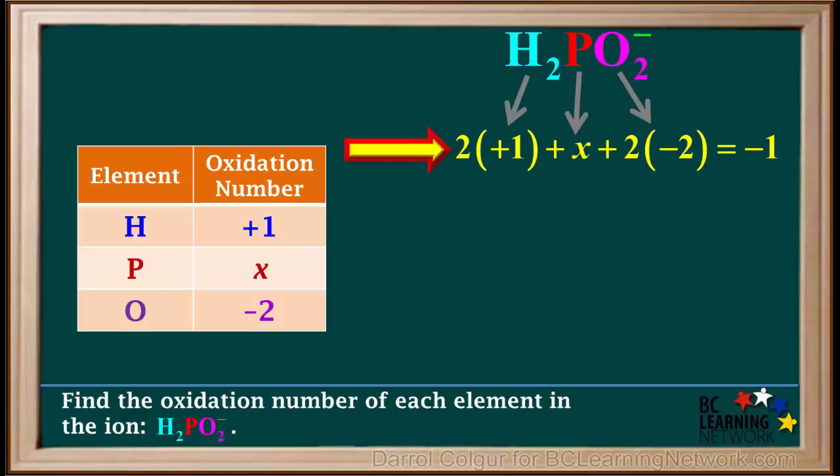Now, we solve this equation for x to find the oxidation number of phosphorus in this ion. 2 times positive 1 is equal to 2. We write x here. And 2 times negative 2 is equal to negative 4, so we write minus 4 here.